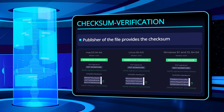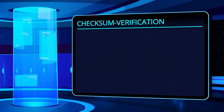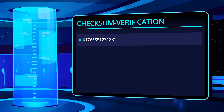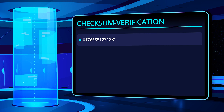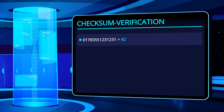There are different methods for calculating such a checksum. For simplicity, let's assume that the downloaded file is not an installation file, but a simple text file containing a phone number — a simple sequence of numbers. One way to create a simple checksum here is to calculate its cross sum.